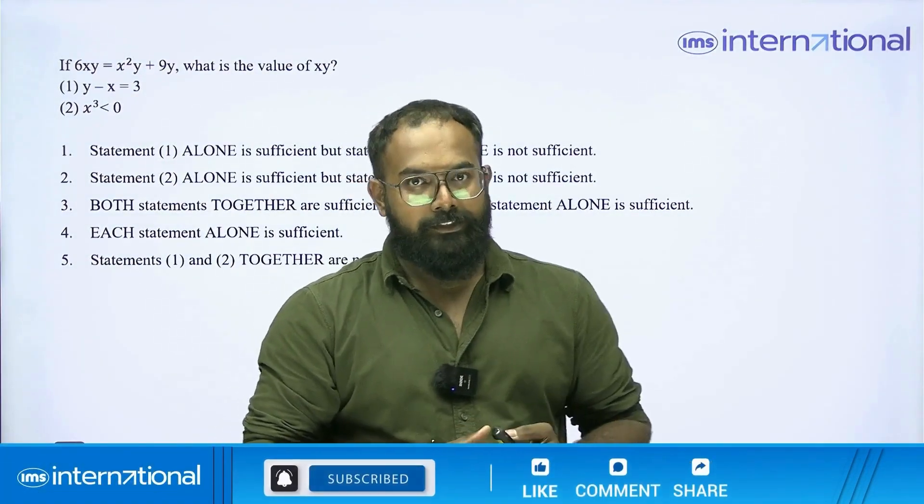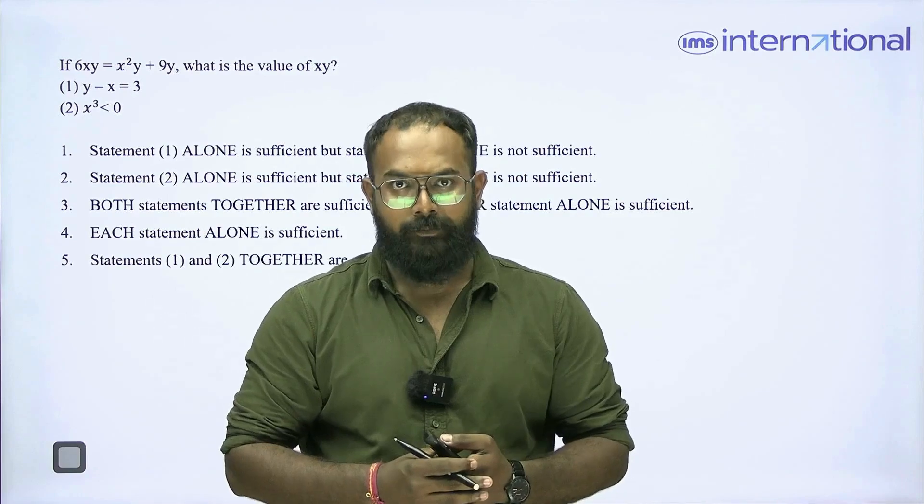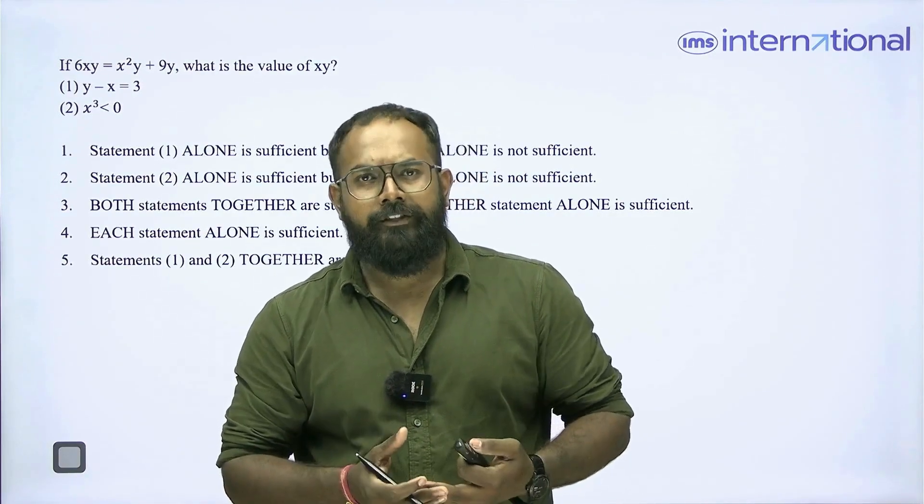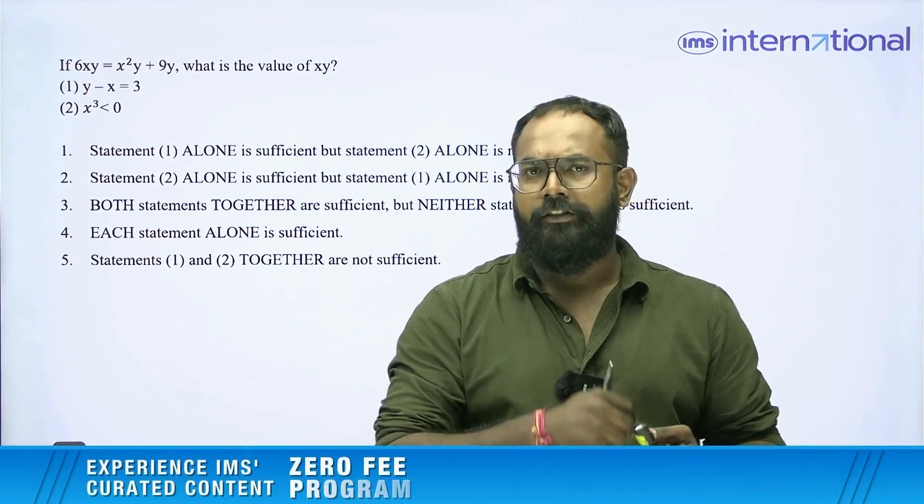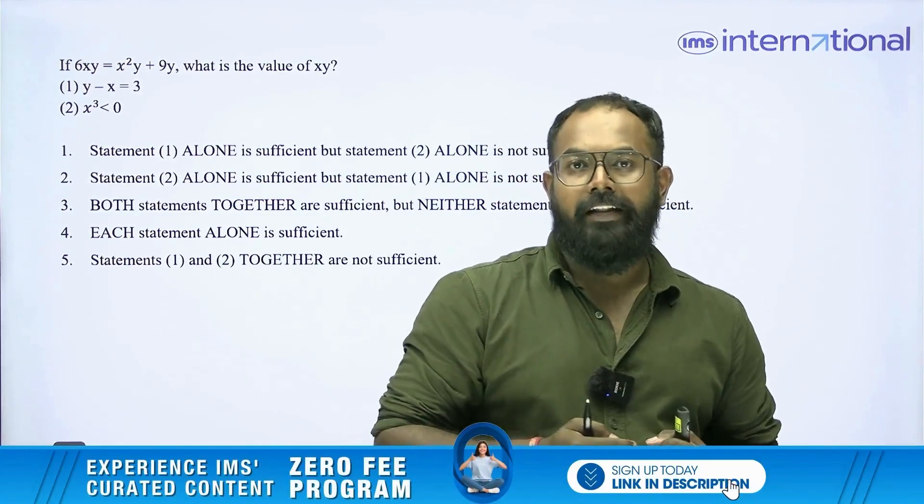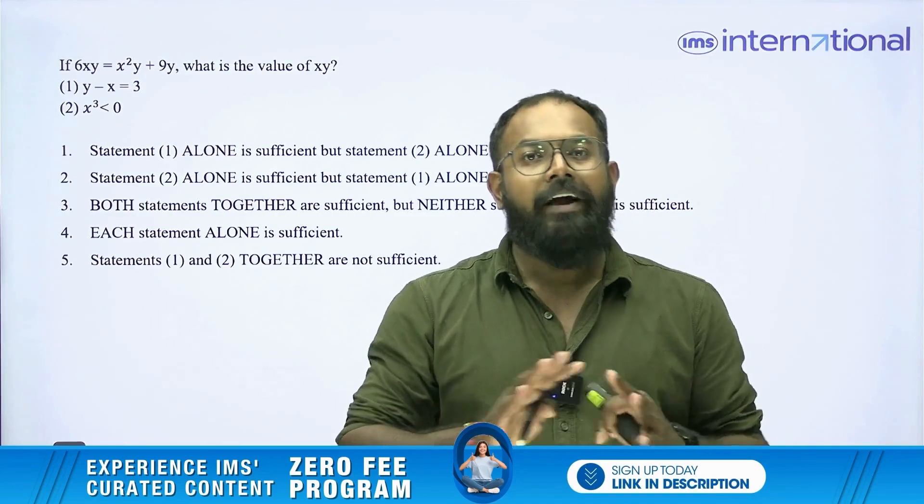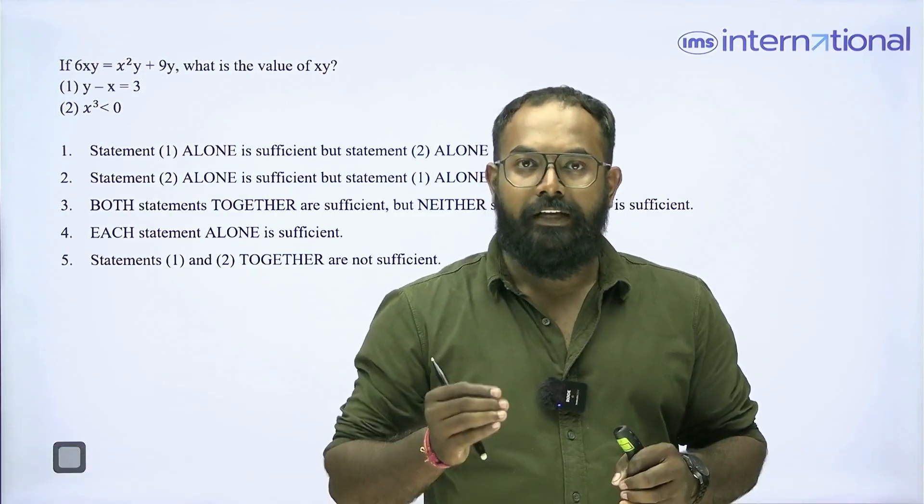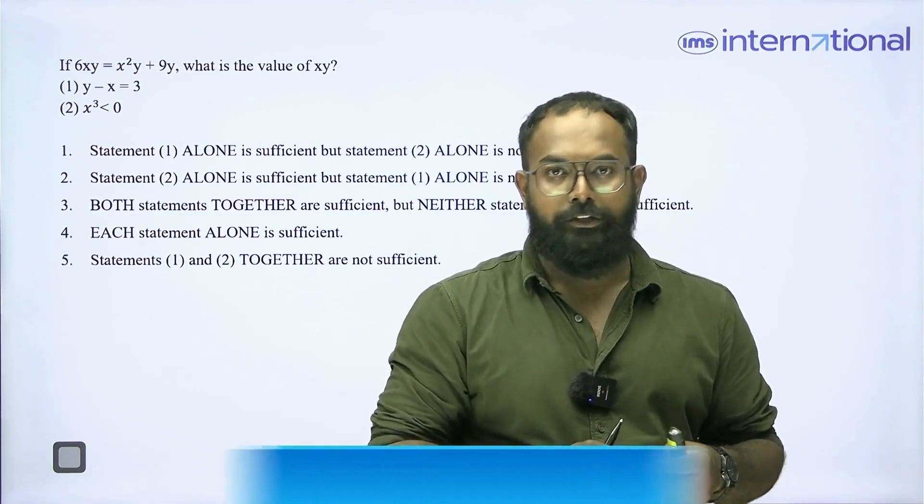So this is a data sufficiency question. Where do we find this question? This question is seen in the data insights section. What do we have to do in this question? In this problem type, the question is given followed by two different statements and we have to analyze which of the statement is sufficient enough to answer the question. We do not have to find the answer, just need to say which of the given statements if true is sufficient enough to answer the question.